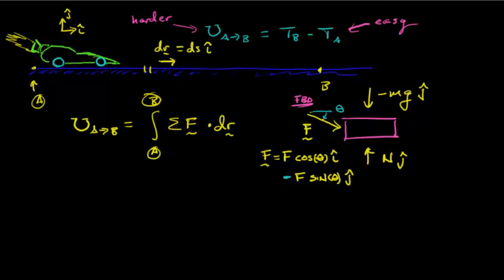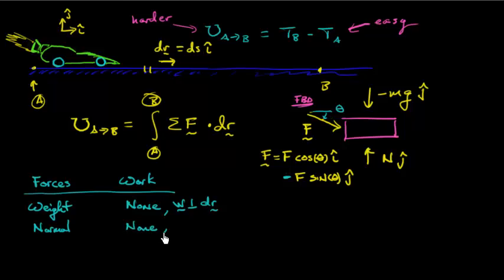All right, so what I'm going to do next is make a little table. A table that sort of lists out the forces that I have and what type of work they produce. I'll start with the weight. I'll put them in order when I put them on the free body diagram. And the weight, notice the weight is perpendicular to dr. So the weight is downward in the j hat direction. Dr is in the i hat direction. So j dot i or i dot j, that's zero. So work is no work because the weight is perpendicular to dr. So let's move on to the next one. I've got a normal force. And it is also in the j hat direction. So once again, it produces no work. And it does for the same exact reason. The normal force is perpendicular to dr. So that dot product is zero.